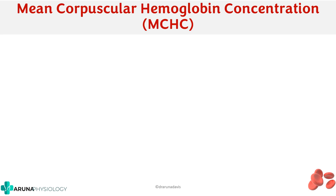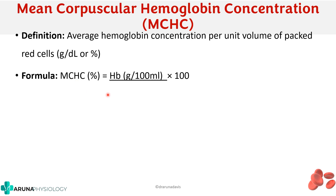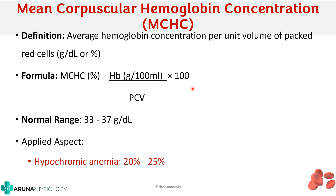The third index is mean corpuscular hemoglobin concentration, or MCHC. It is the average hemoglobin concentration per unit volume of packed red cells. The formula is hemoglobin in grams per deciliter multiplied by 100, divided by PCV. The normal range is around 33 to 37, and it is considered hypochromic if the percentage is between 20 to 25. MCHC is the most reliable indicator because it reflects average concentration per unit volume and does not take into account the size of the RBC.